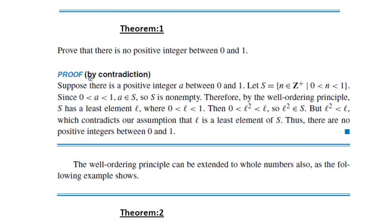In the contradictory approach, we assume something wrong, carry out calculations, and arrive at an absurdity — a contradiction. Suppose there is a positive integer 'a' between 0 and 1, that is 0 < a < 1. Let S be the set of positive integers which lie between 0 and 1. Since we assumed 'a' is a positive integer between 0 and 1, 'a' belongs to S, so S is non-empty.